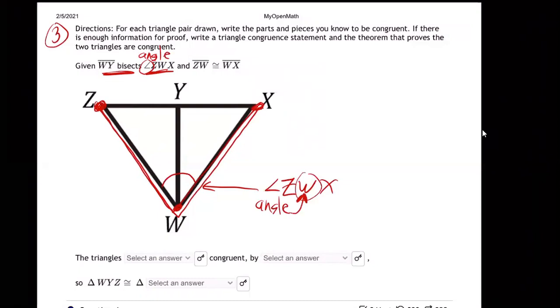You might wonder, well, why don't they just say angle W? Well, because if they said angle W, how do you know they don't mean just that half or just that half? Well, they mean the whole thing.